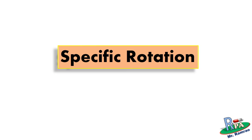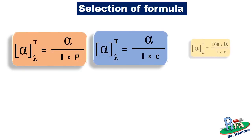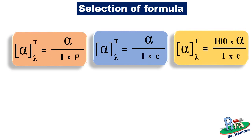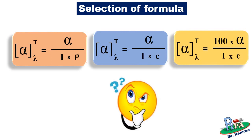From today's tutorial you will learn how to calculate specific rotation. In GPAT 2017 one question was asked on this topic but students made mistakes because of some confusions, so let's get rid of those confusions. For the calculation of specific rotation you can use one of these three formulae, but the question is which formula you have to select. One by one let's go through all three of them, then we will solve a few examples based on these formulae.